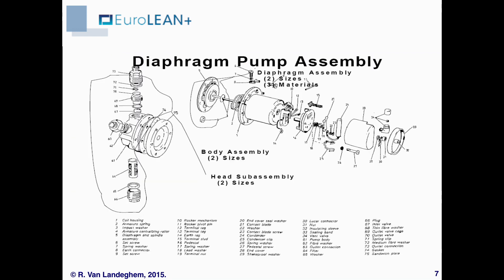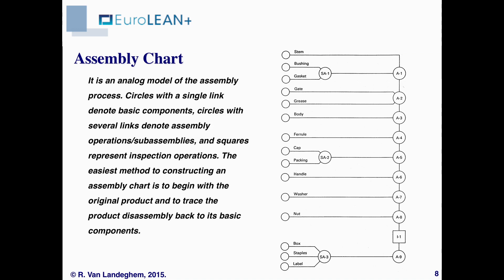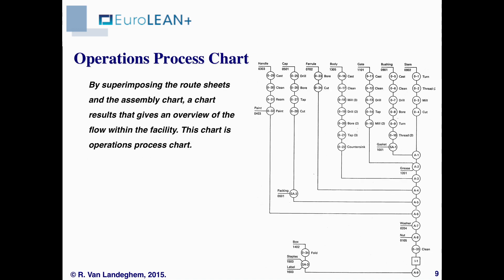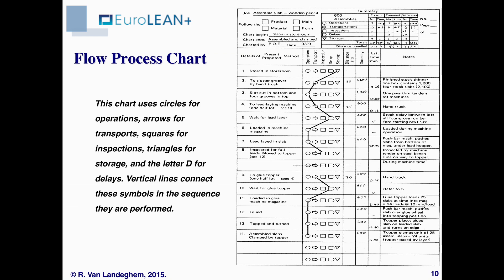How products are assembled and which parts and components they need is important information, and exploded views can convey this. The assembly chart tells us the assembly sequence. The operations process chart is a slightly different way of showing the same information, combining both assembly components and the processes, which are shown as circles in this chart. The flow process chart looks in more detail at the processes at each workstation and between workstations, and already identifies storage requirements.